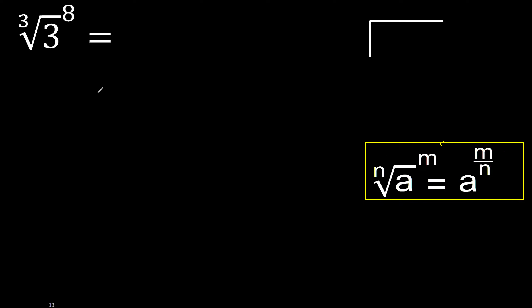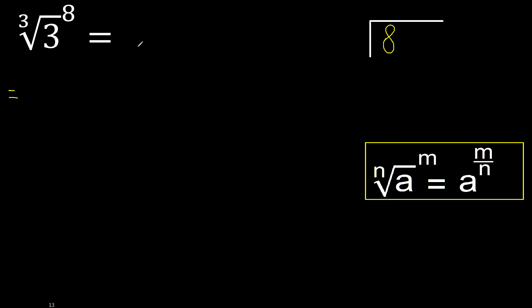Like this: 8 cannot be divided by 3 exactly. Therefore, like this — 8 divided by 3. We ask: 3 multiplied by which number is nearest to 8 but not greater?